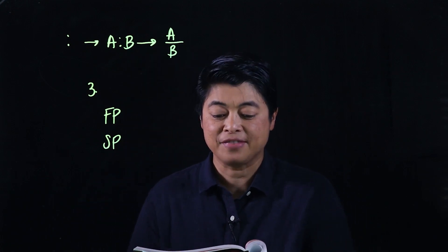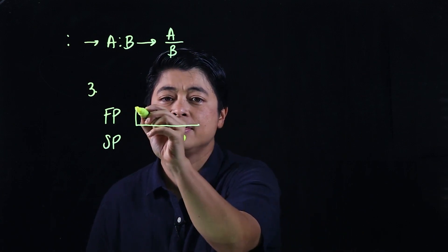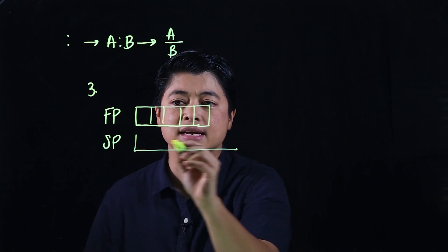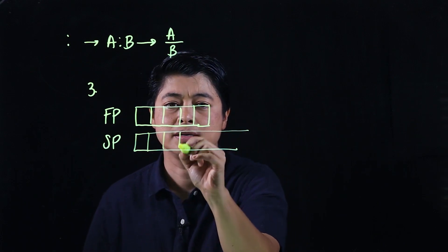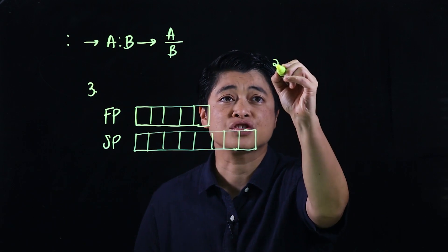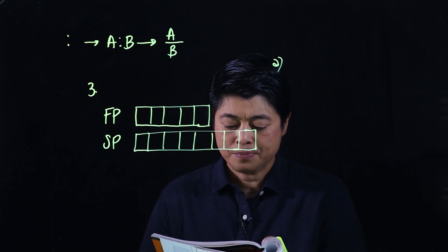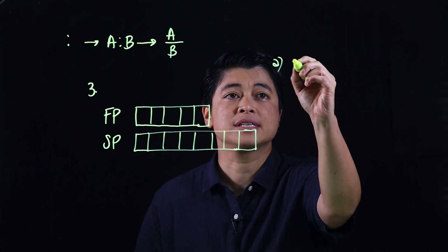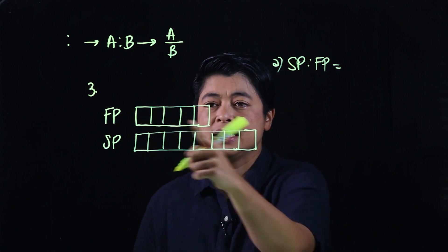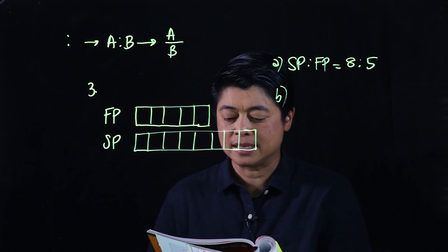Since the first piece is five-eighths of the second piece, the first piece has 5 units and the second has 8 units. The first question asks for the ratio of the length of the second piece to the length of the first piece — that is 8 to 5.